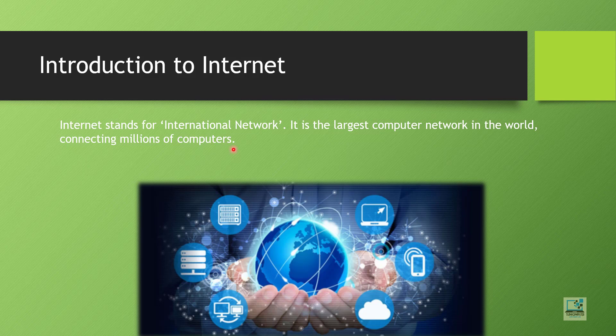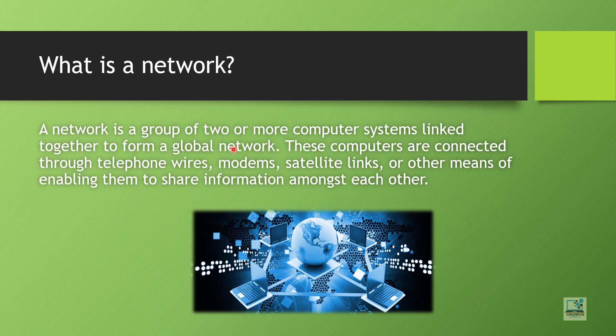It is a network which connects all the computers. Now when I say computer, I don't mean only desktop or laptop. Computer means any device which can do any kind of calculation or perform any kind of operation — for example, a smartphone is also a type of computer, a smartwatch is also a type of computer, similarly a smart TV is also a type of computer. So any computing device — smartphone, tablet PC, desktop, laptop, or smart TV — anything that can connect to this network can use the services of the internet.